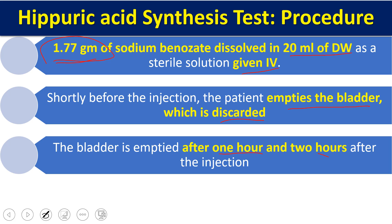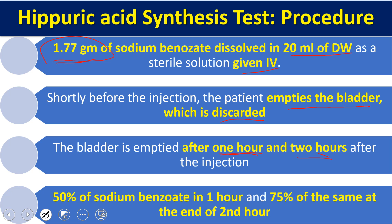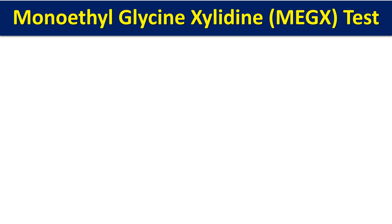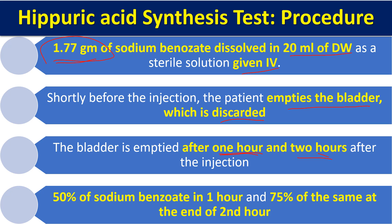With the IV method, 50 percent of sodium benzoate should be excreted in one hour, and 75 percent by the end of the second hour. If this amount is reduced, the person has liver abnormality. Reduced excretion can indicate cirrhosis, hepatitis, or other liver disorders affecting the detoxification reaction — meaning either enzymes are absent or there is tissue damage.